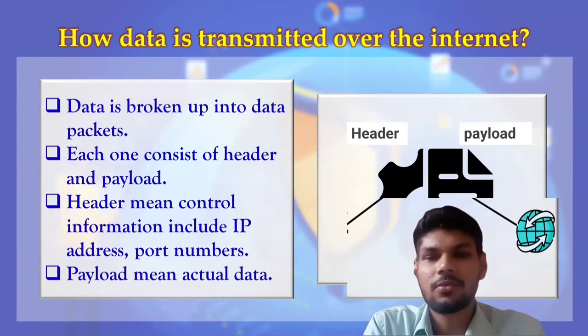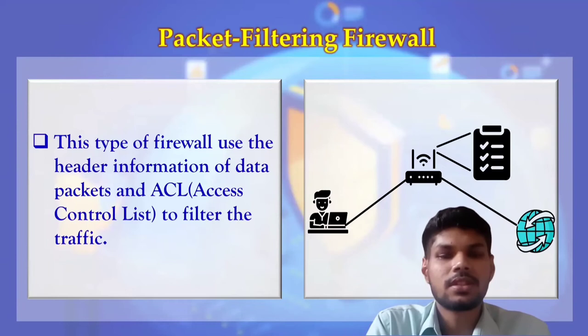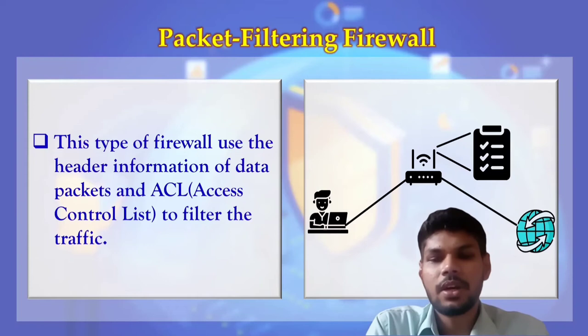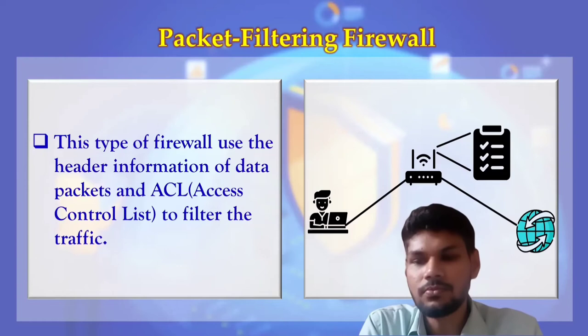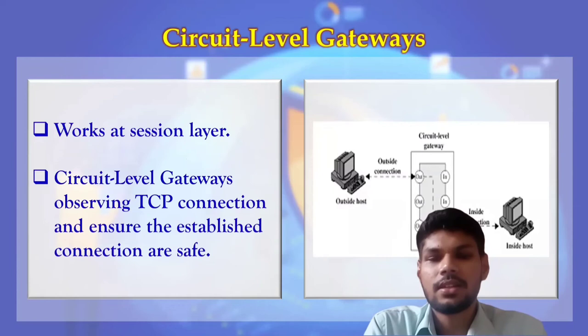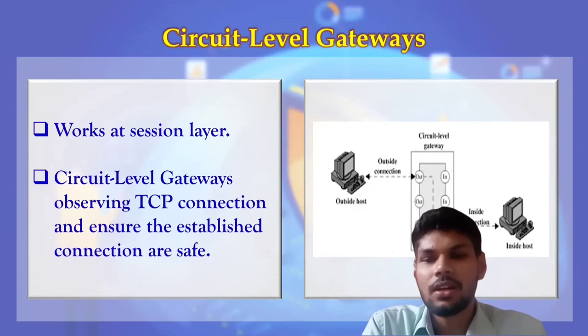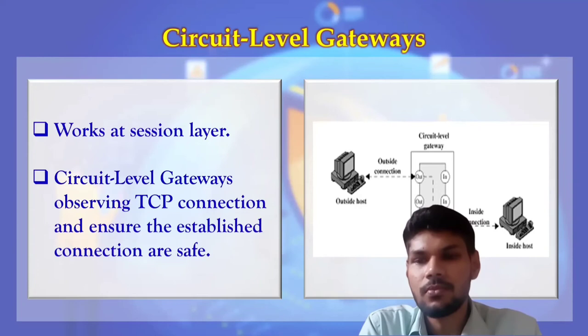Packet filtering firewalls use a basic mechanism involving routers and switches. They compare the header information of each packet against an Access Control List (ACL), which contains a set of allowed IP addresses and port numbers. Circuit-level gateways work on the session layer of the OSI model. When connecting to a server, TCP establishes a connection in the session layer, and circuit-level gateways ensure that the established TCP connection is secure. Both packet filtering and circuit-level firewalls only check the header, not the payload.